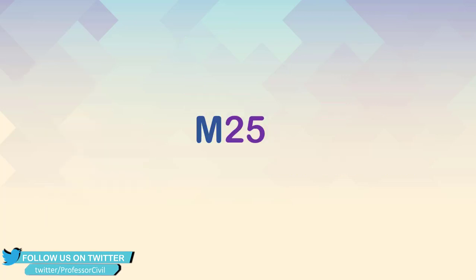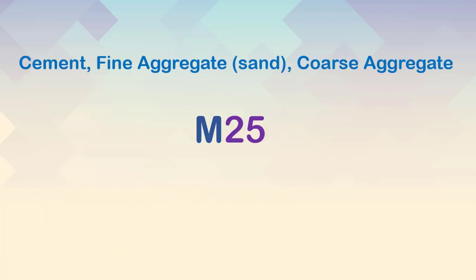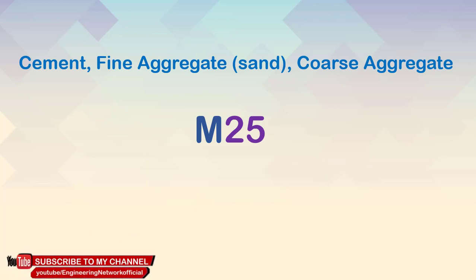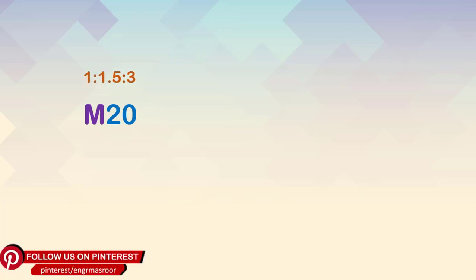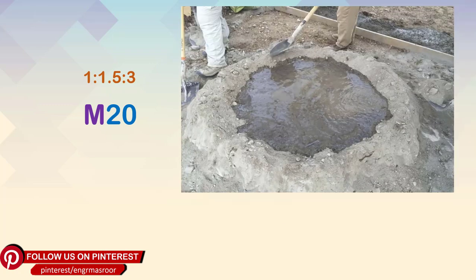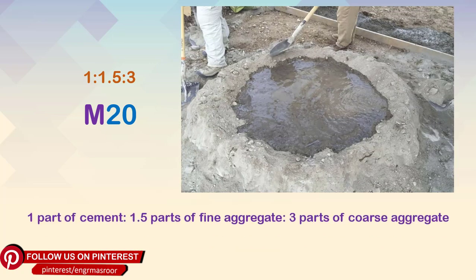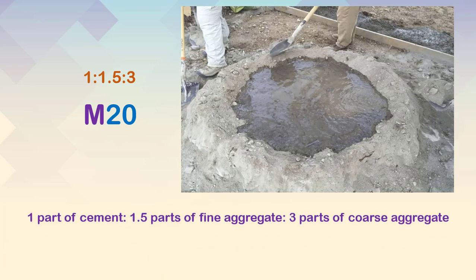These grades of concrete also represent various mix ratios of cement, fine aggregates (which is sand), and coarse aggregates. For example, M20 grade concrete represents a mix ratio of 1:1.5:3, which means that for every one part of cement, 1.5 parts of fine aggregates and 3 parts of coarse aggregates are mixed.